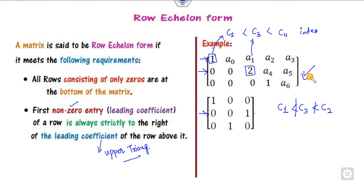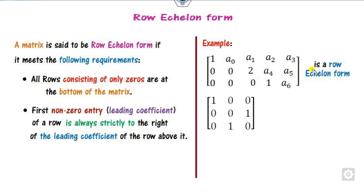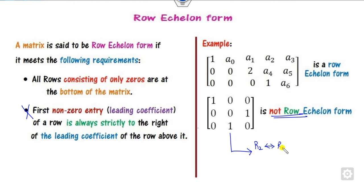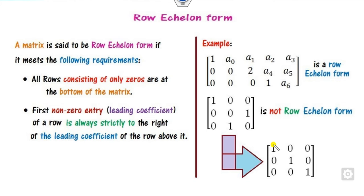In a counterexample, the first non-zero leading entry is in C1, the second in C3, and then C2 — clearly the ordering is not preserved. Therefore, that matrix is not in row echelon form because it does not satisfy this property. To fix it, interchange rows R2 and R3.